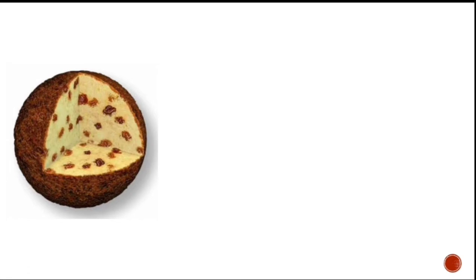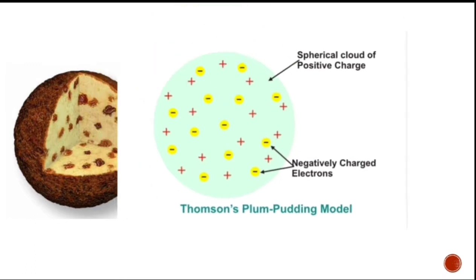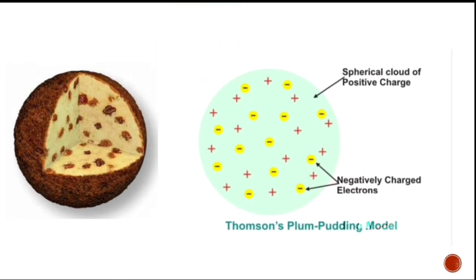This model was proposed soon after the discovery of electron but before the discovery of the atomic nucleus. The model tried to explain two properties of atoms then known: that the electrons are negatively charged particles, and atoms have no net electric charge.